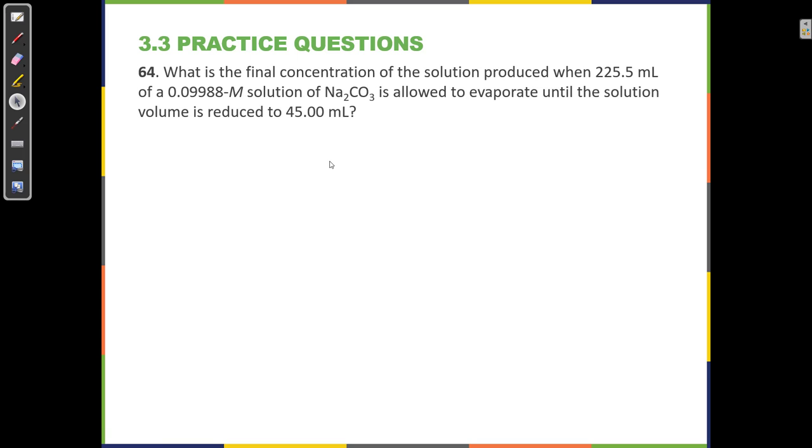What is the final concentration of the solution produced when 225.5 milliliters of a 0.09988 molar solution of sodium carbonate is allowed to evaporate until the solution volume is reduced to 45 milliliters? Let's see what we have here. We have this number, we have this number, and we have this number. I have two volumes and a concentration, and the question is asking, what is the final concentration? I'll have two volumes and two concentrations. That should start to ring a bell, and you should remember, what this problem is describing is kind of like a dilution. I'm starting with some concentration and some volume, and then I either add water or I remove water, and I have a new concentration and a new volume.